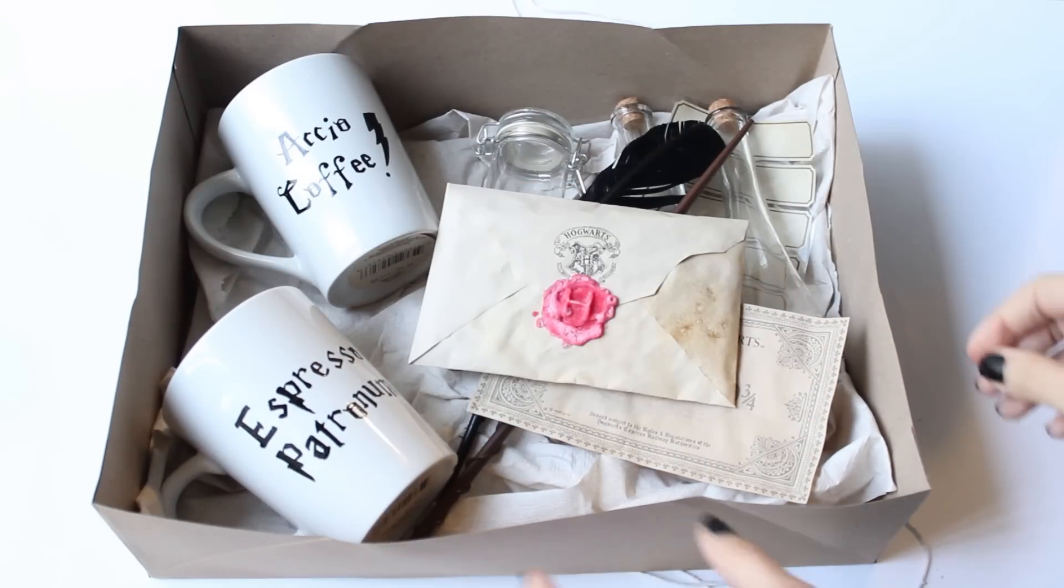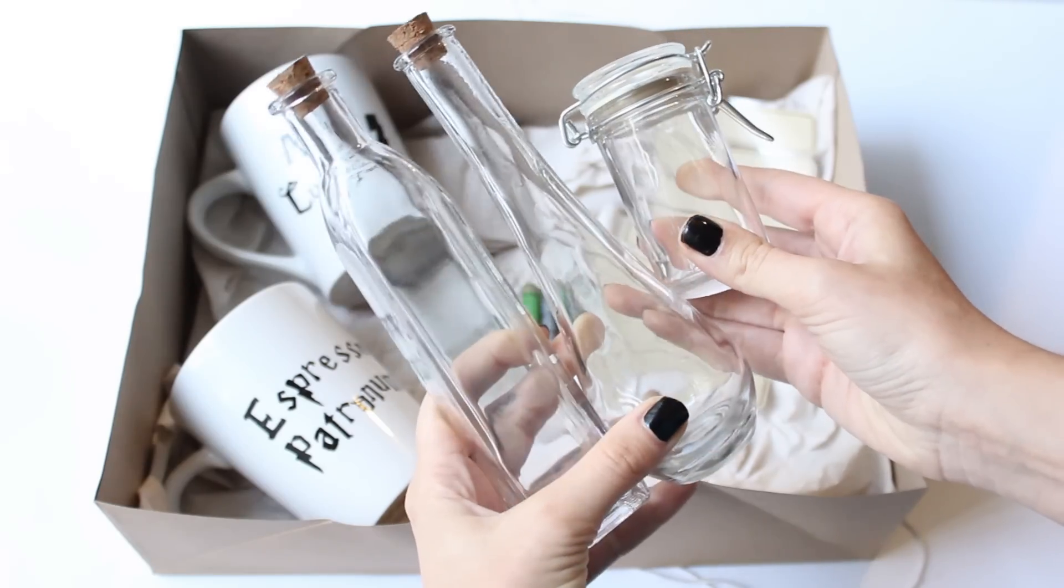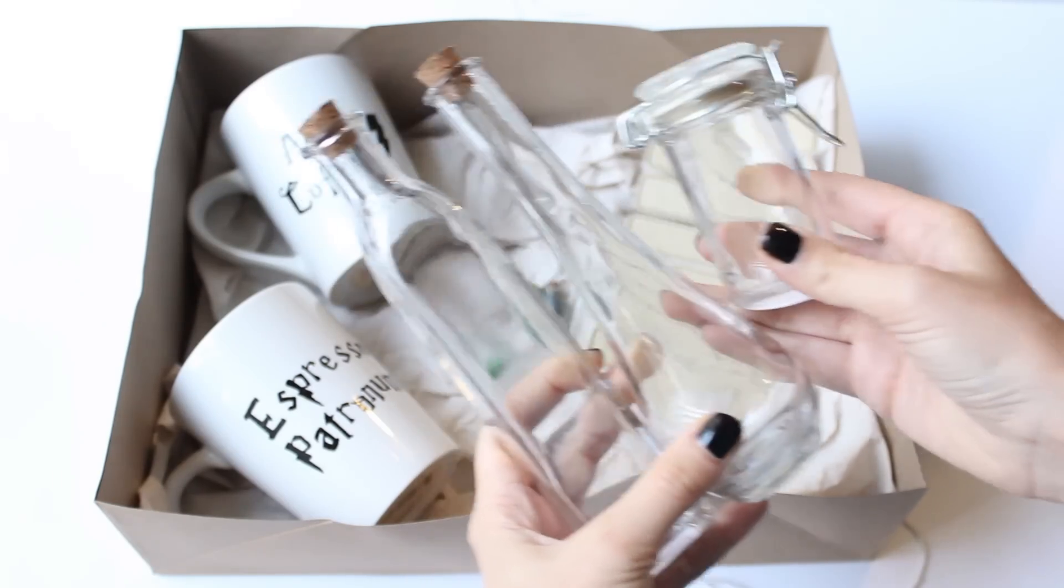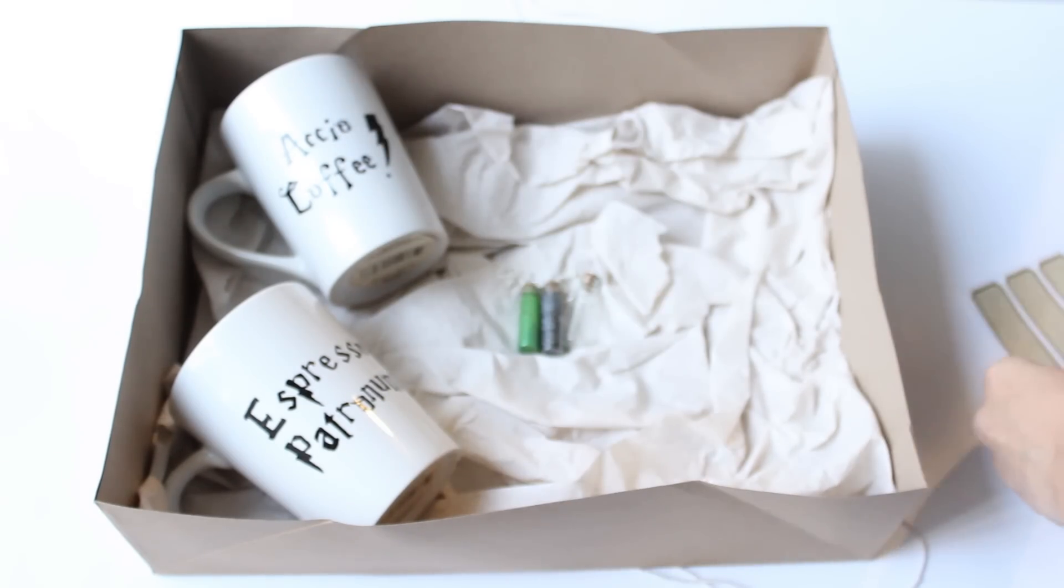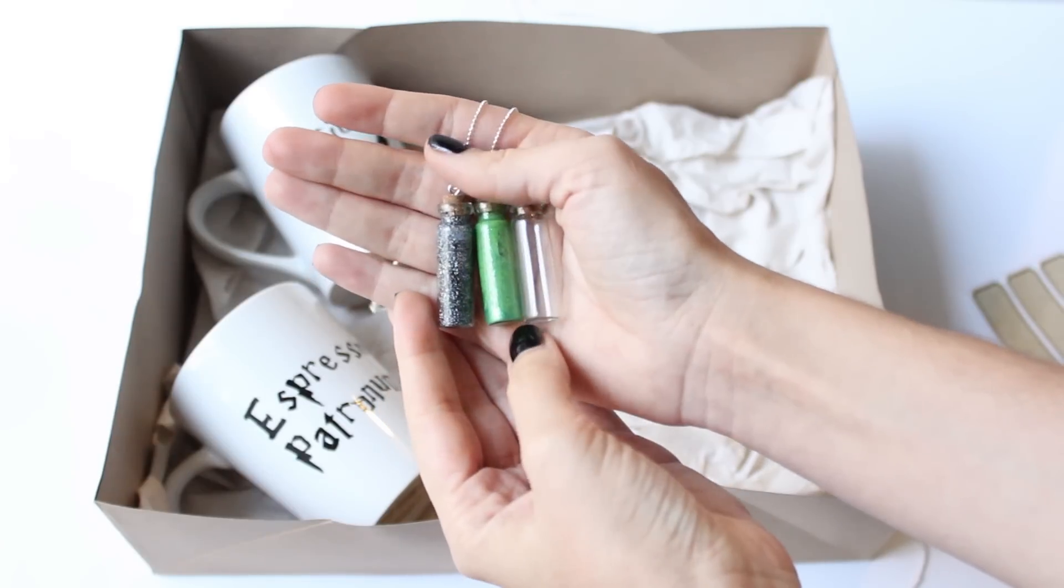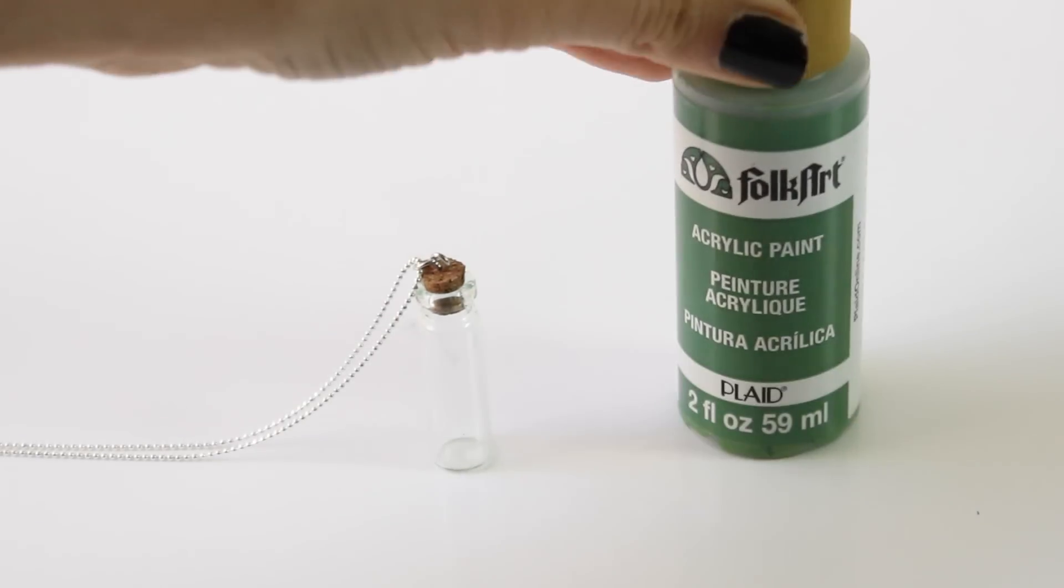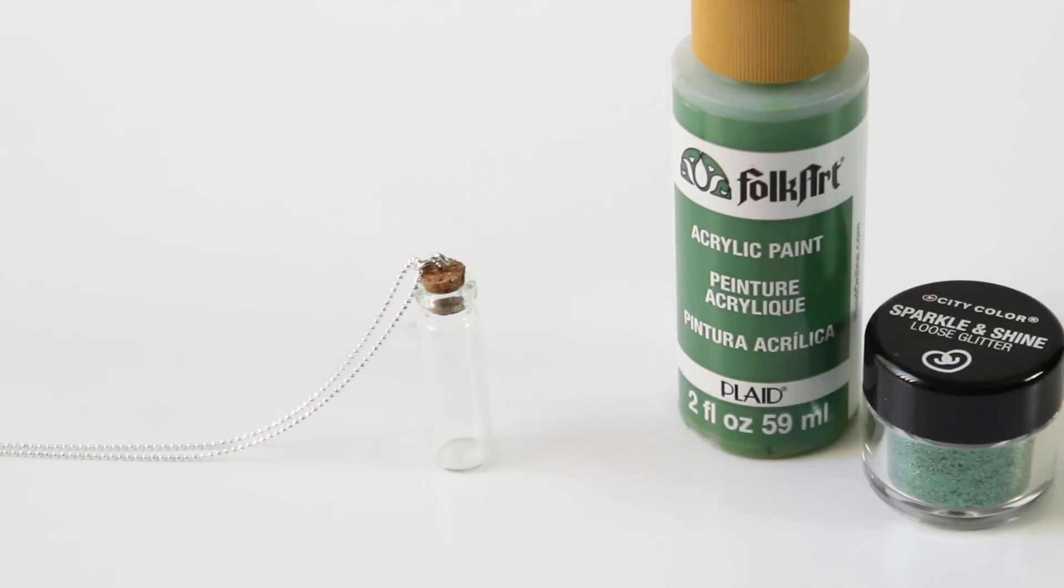Now put everything in a box. I decided to add some glass bottles and containers for potions, some labels, and also some super small glass bottles. If you want to make a potion, I suggest you to just mix glitters, acrylic paint and some school glue.